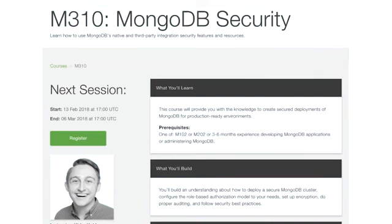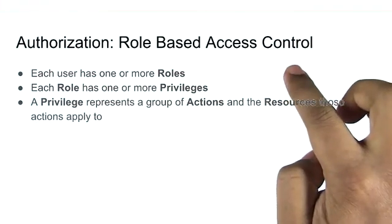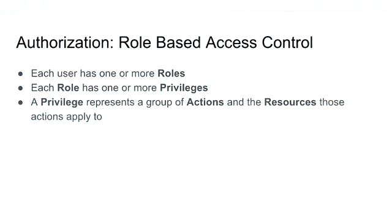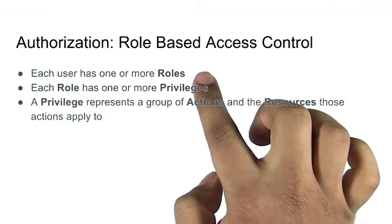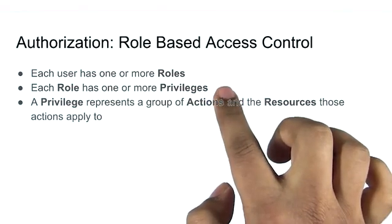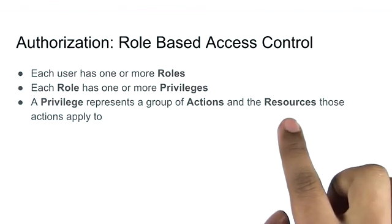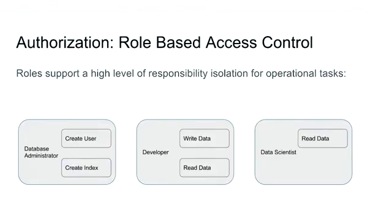Now, we've covered the who are you. What about the what are you allowed to do? MongoDB uses role-based access control for authorizing an authenticated user. Each MongoDB user has one or more roles associated to it. Each role has one or more privileges. These privileges represent a group of actions and the resources that those actions apply to. Role-based access control allows you to ensure a high level of responsibility isolation among individual users. That means a user can be granted the exact roles required for that user to execute its expected workload.